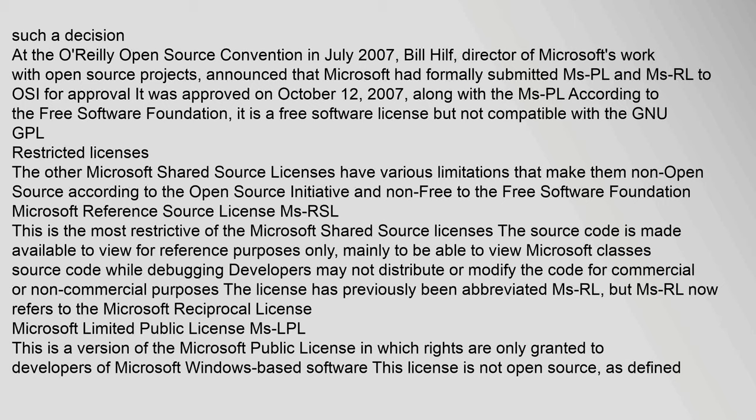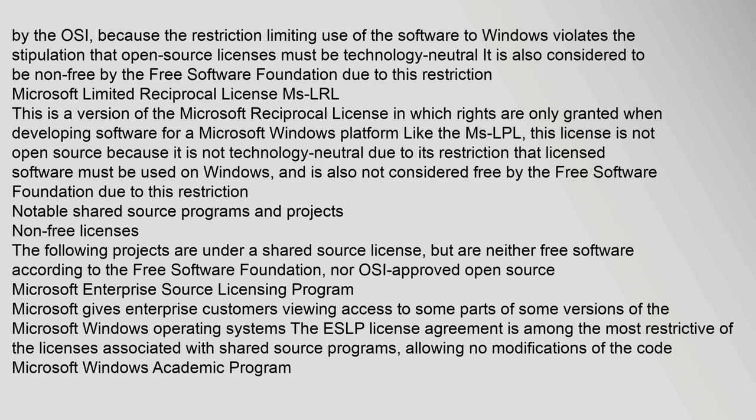Microsoft Limited Public License (MsLPL): This is a version of the Microsoft Public License in which rights are only granted to developers of Microsoft Windows-based software. This license is not open source as defined by the OSI, because the restriction limiting use of the software to Windows violates the stipulation that open source licenses must be technology neutral. It is also considered non-free by the Free Software Foundation due to this restriction. Microsoft Limited Reciprocal License (MsLRL): This is a version of the Microsoft Reciprocal License in which rights are only granted when developing software for a Microsoft Windows platform. Like the MsLPL, this license is not open source because it is not technology neutral, and is also not considered free by the Free Software Foundation due to this restriction.